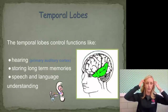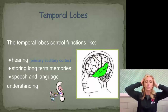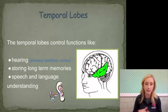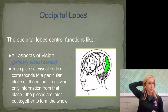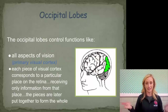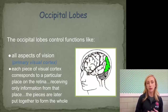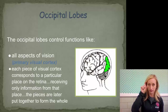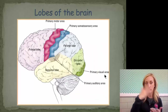The temporal lobe is around your ears — if you put your hair behind your ears, you're touching your temporal lobe. It controls hearing via the primary auditory cortex, stores long-term memories, and controls speech and language comprehension. The occipital lobe in the back controls all aspects of vision via the primary visual cortex. Each piece of the cortex corresponds to a particular place on our retinas, and those pieces are later put together to form the whole perception of an image.